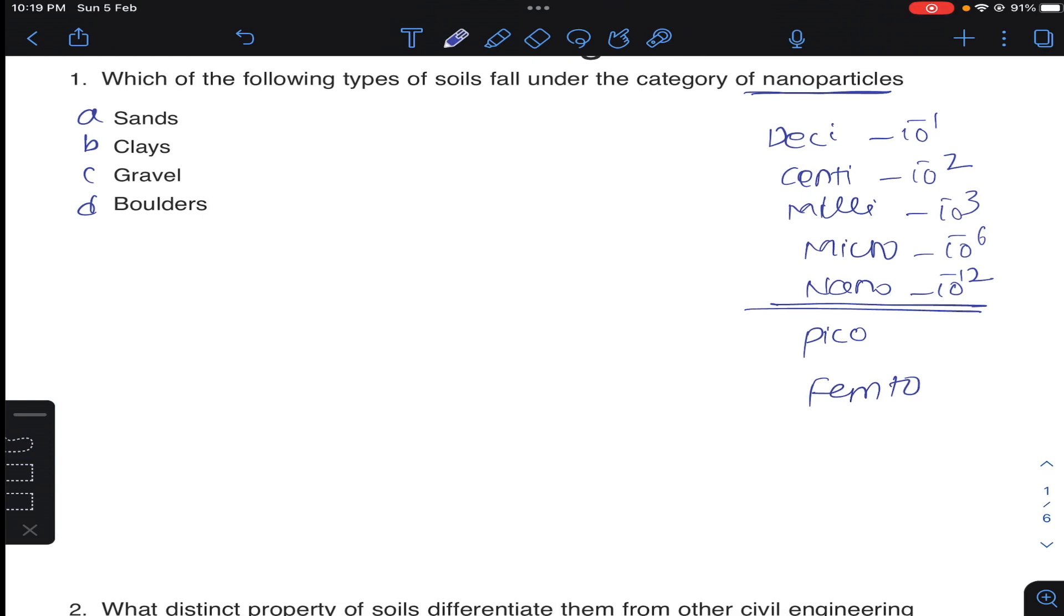Soil has been classified into coarse aggregates and fine aggregates. Coarse aggregates are boulders, gravel, sand - these are all having size greater than 75 micron.